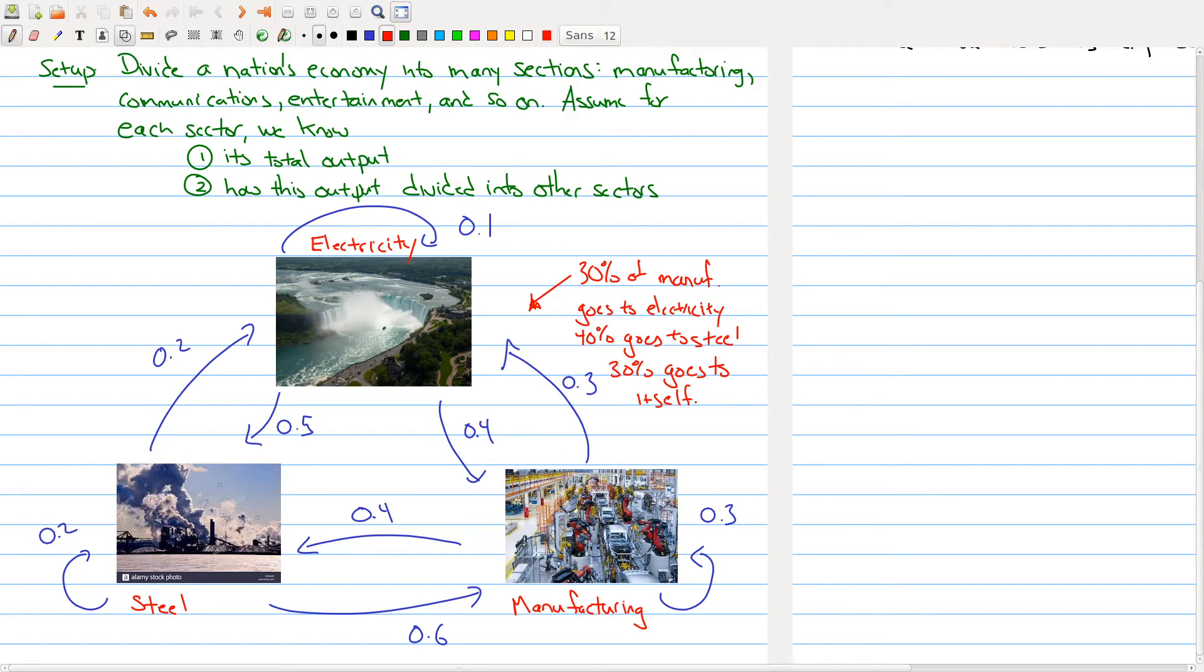Now, if I've done everything correctly, what you should see is all the arrows that go out of a sector should sum up to one, which makes sense, because you want to divide up the output among all the sectors. There shouldn't be any unaccounted for output. So for electricity, 50% goes to steel, 40% goes to manufacturing, 10% goes to itself. That accounts for 100% of the output. This is our setup. We have various stages of our economy, and we're keeping track of how the output is divided among the various sectors.